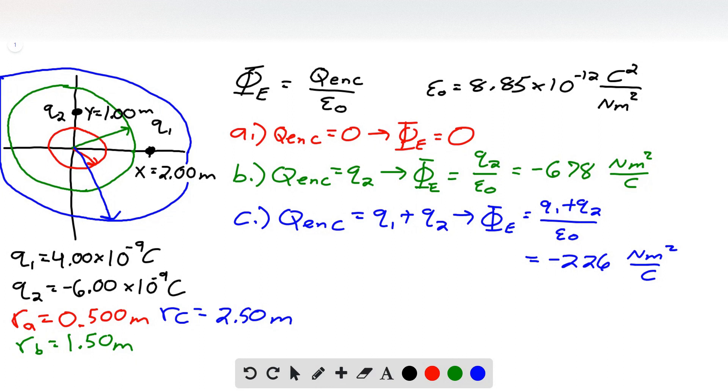A point charge Q1 equals 4.00 nanocoulombs is located on the x-axis at x equals 2.00 meters, and a second point charge Q2 equals negative 6.00 nanocoulombs is on the y-axis at y equals 1.00 meters. What is the total electric flux due to these two point charges through a spherical surface centered at the origin and with radius A, 0.50 meters, B, 1.50 meters, and C, 2.50 meters?